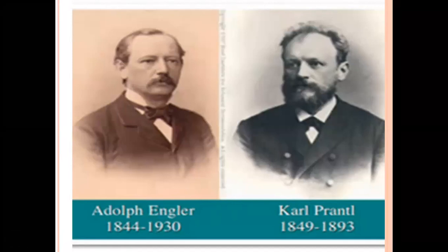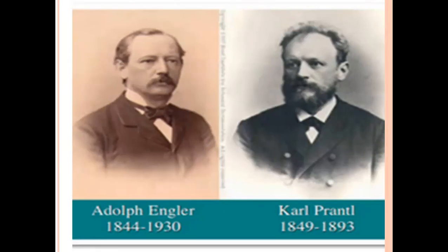They proposed a phylogenic system of classification. This classification is based on the Eichler classification. They classified all plants from algae to angiosperms. This was published in 'Die Natürlichen Pflanzenfamilien' in 23 volumes. It replaced Bentham and Hooker's classification and is widely used in Europe and America.